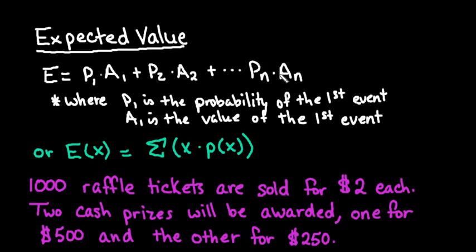So P sub n just represents the last event. So if you had 3 events, it would be 3. If you had 10 events, it would be through 10. Another formula is the expected value of x equals the sum using summation notation of the value of x times the probability that x occurs. This says the exact same thing, it's just written in a different format, and depending upon your textbook is how this would show up.